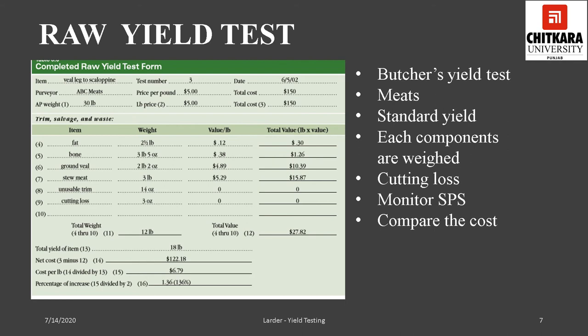The butcher's test must be conducted regularly on a reasonable number of pieces so as to get a more accurate yield of each item depending on what it is going to be used for. The butcher's test is also conducted to monitor the extent to which any one dealer is adhering to specifications. With the help of butcher's test results, menu prices can be planned because costs are known. The butcher's test is also valuable to compare the cost of a pre-portioned item purchased from a vendor against the cost of the same item processed in the establishment.